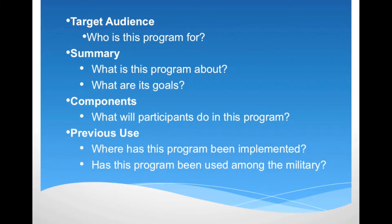The previous use section states where, if any locations, the program has been or is being used. This is also where we state if the program has been used among the military. If so, you will find an icon representing the service branch that has used it to the right of this section. On the Strong African American Families fact sheet, you can see that the program has been tested with over 600 African American families. You can also see that this program has not been used by the military since no service branch icon appears to the right.